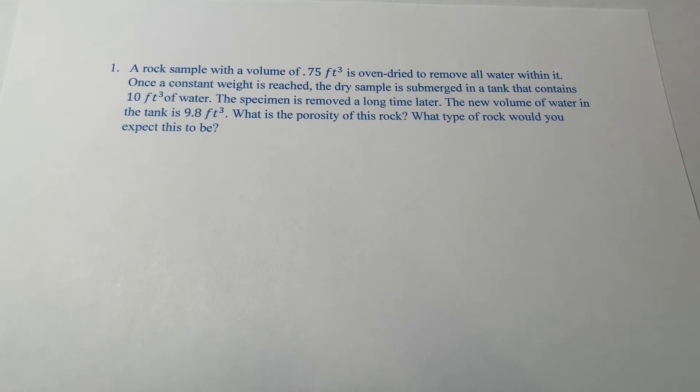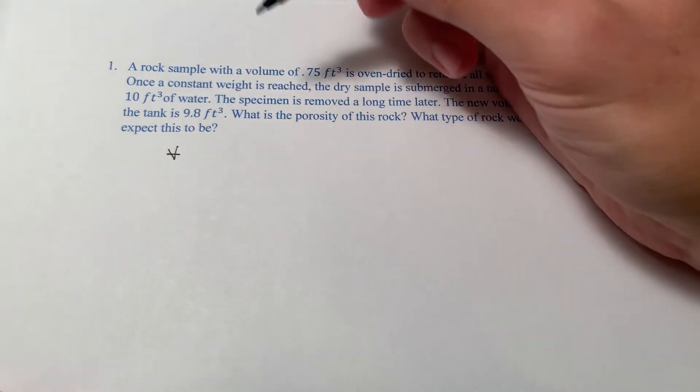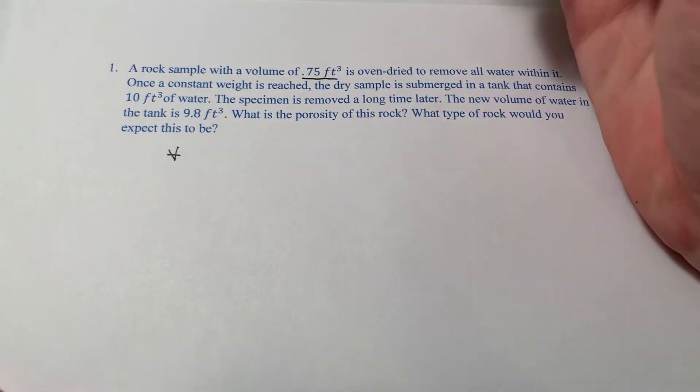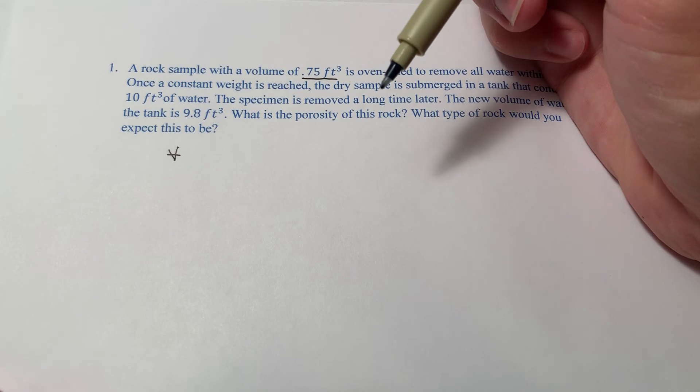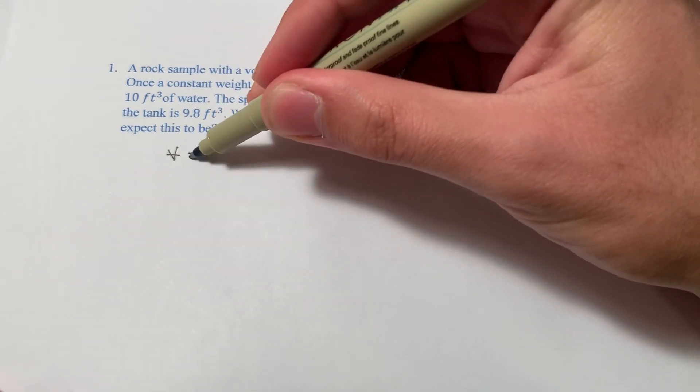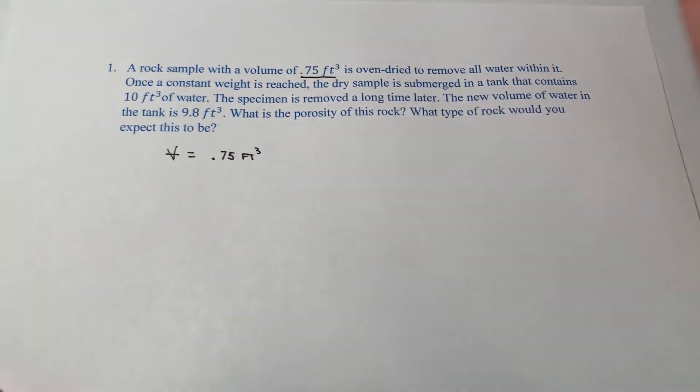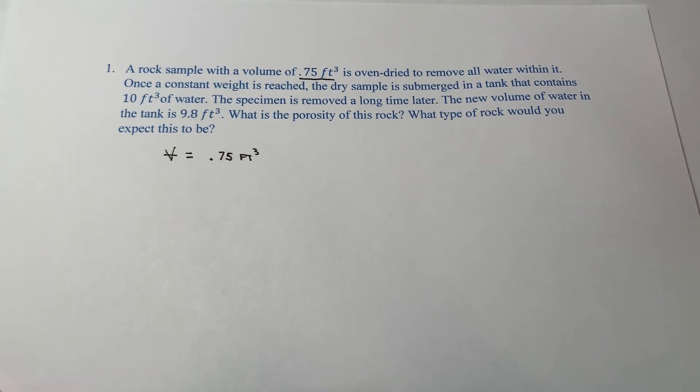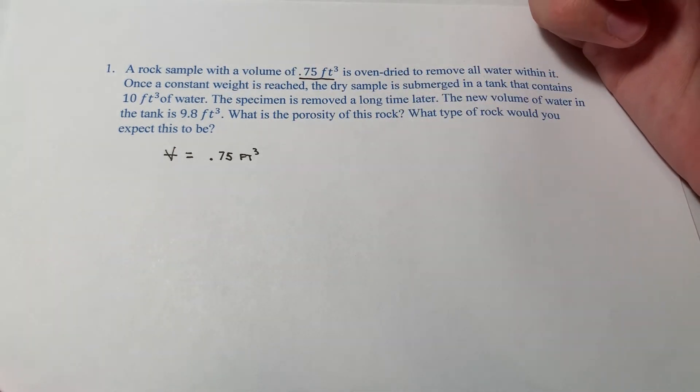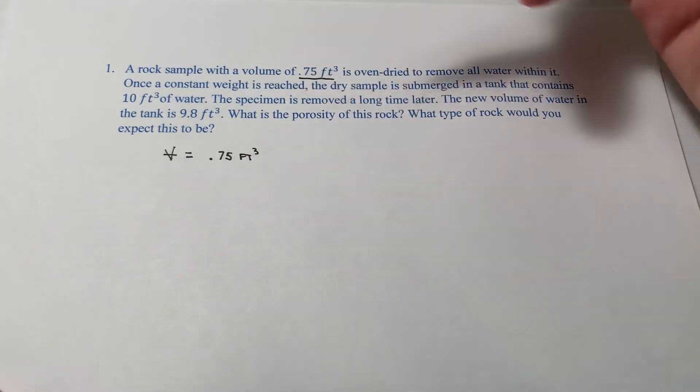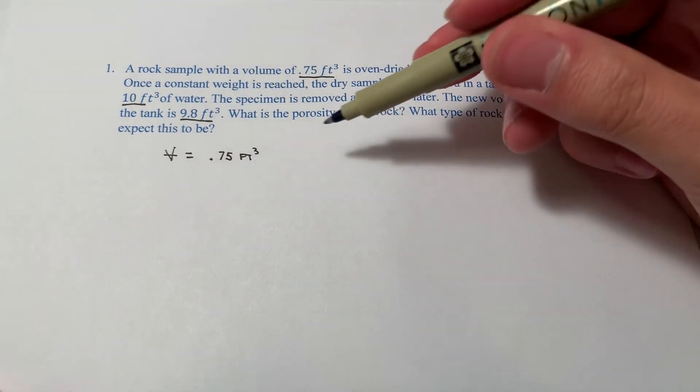Okay, well, let's look at this. So we know that our initial volume, what is our initial volume? Well, it's 0.75 cubic feet. And you can think of that as the total volume, the rock sample plus its void space. However they measured this, we were just given it. And that is the complete package, 0.75 cubic feet. The specimen is submerged in a tank that contains 10 cubic feet of water. Well, what's that trying to get us at? Well, we go from 10 cubic feet to 9.8 cubic feet after it's removed a long time later. So the specimen gets completely saturated.